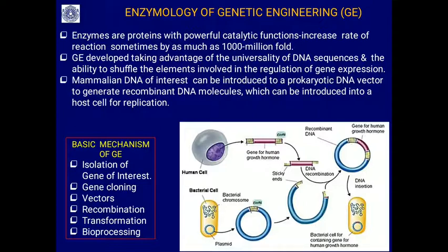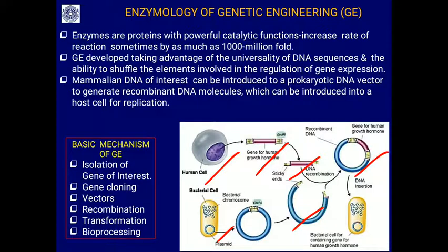For example, a gene for growth hormone is isolated from a human cell, incorporated into a vector taken from a bacterial cell, and using enzymes all these processes take place. We can paste the gene and make millions of copies of the growth hormone gene using recombinant bacteria. This is the essence of genetic engineering.